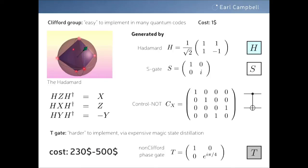Clifford group operations in, say, the toric code or a 2D color code are fairly straightforward — we say they have unit cost. But the T gate is much harder to implement because you have to use magic state distillation to get it in the first place. Assuming you're using the surface code, the cost of a T gate is somewhere between 200 and 500 times as much as any Clifford operation. So to a very good approximation, all we're really interested in is counting T gates.